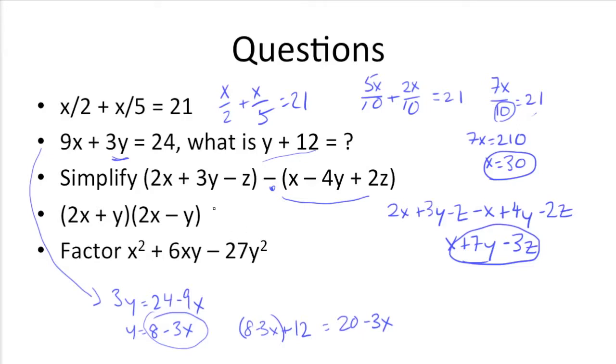So 2x times 2x is 4x². y times -y is -y². So we get 4x² - y².